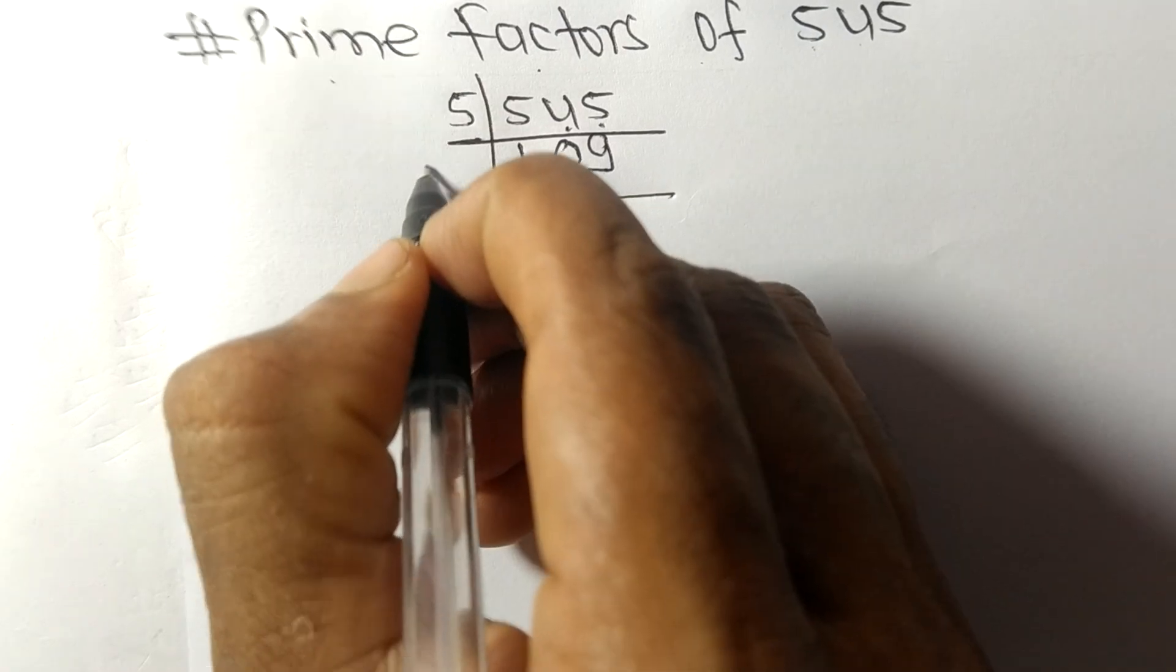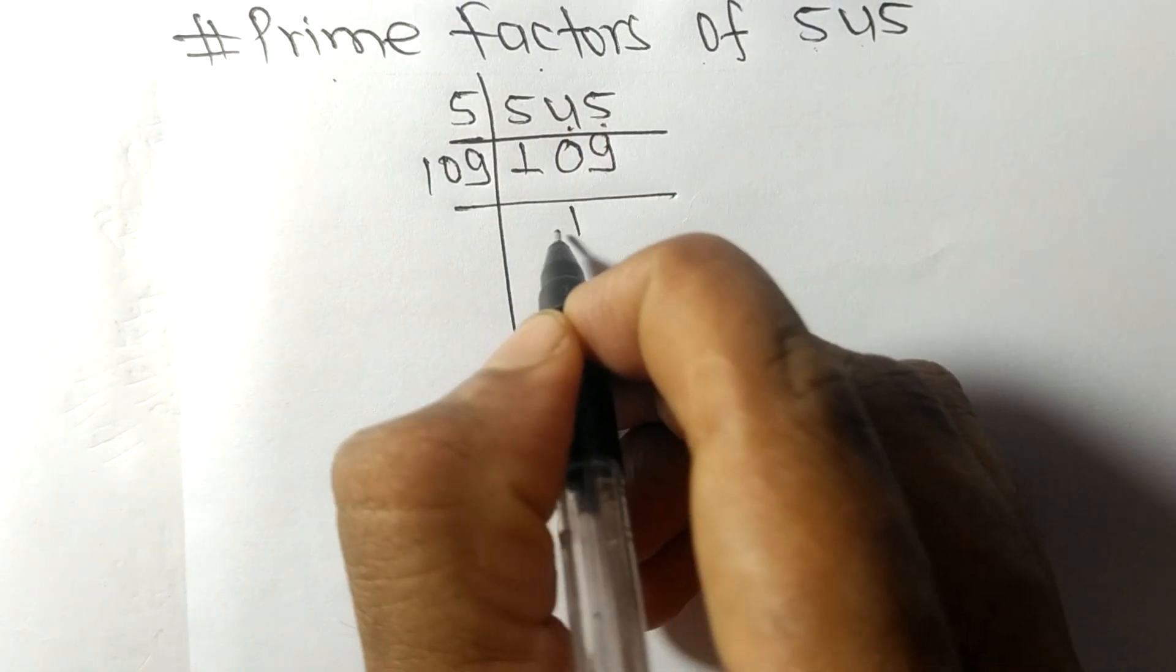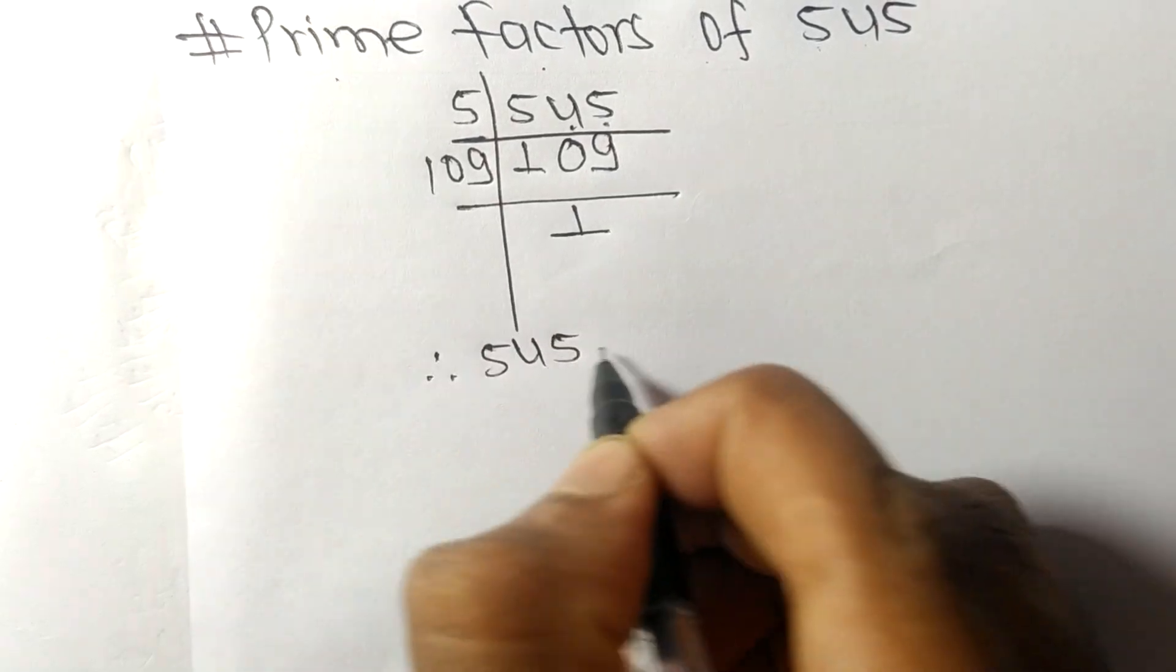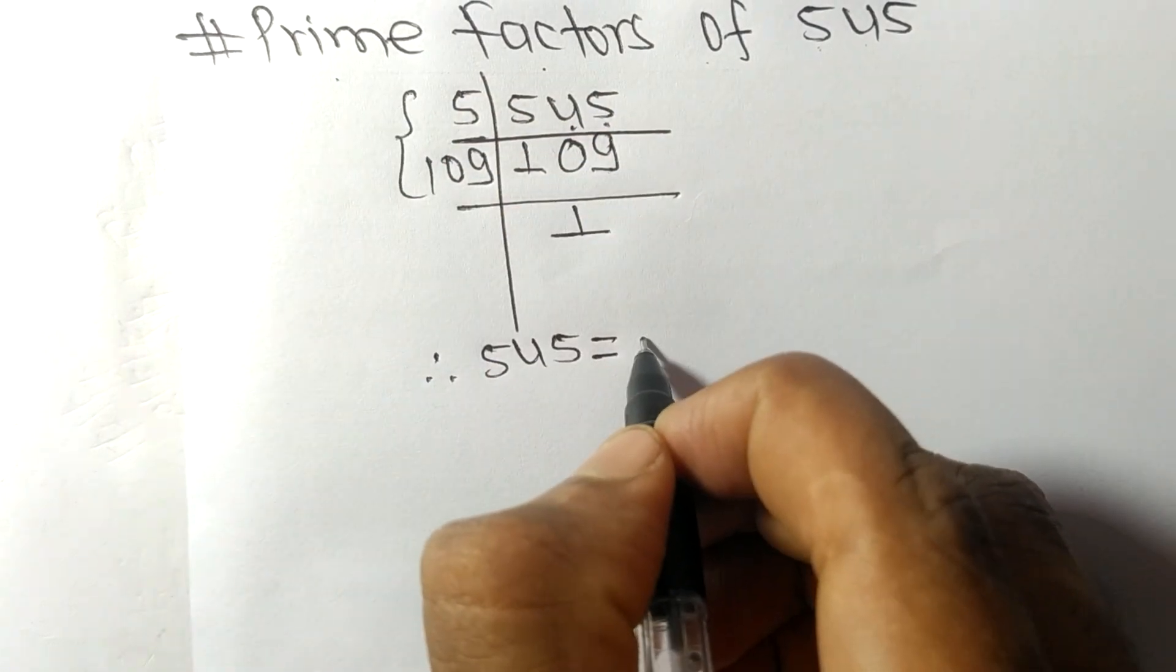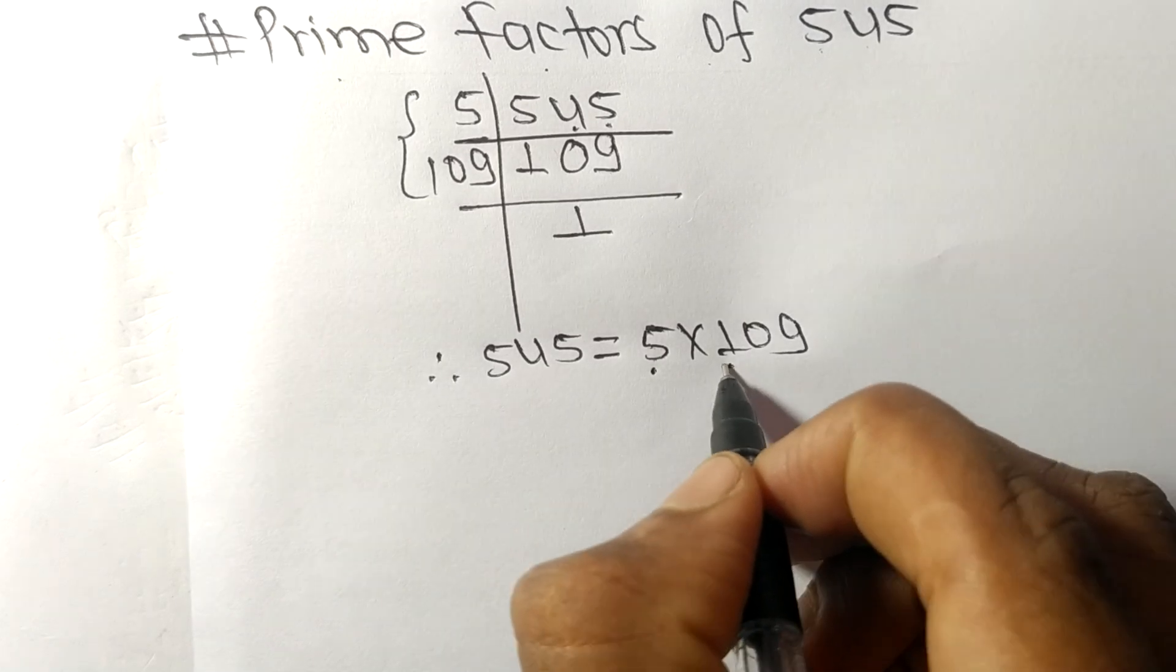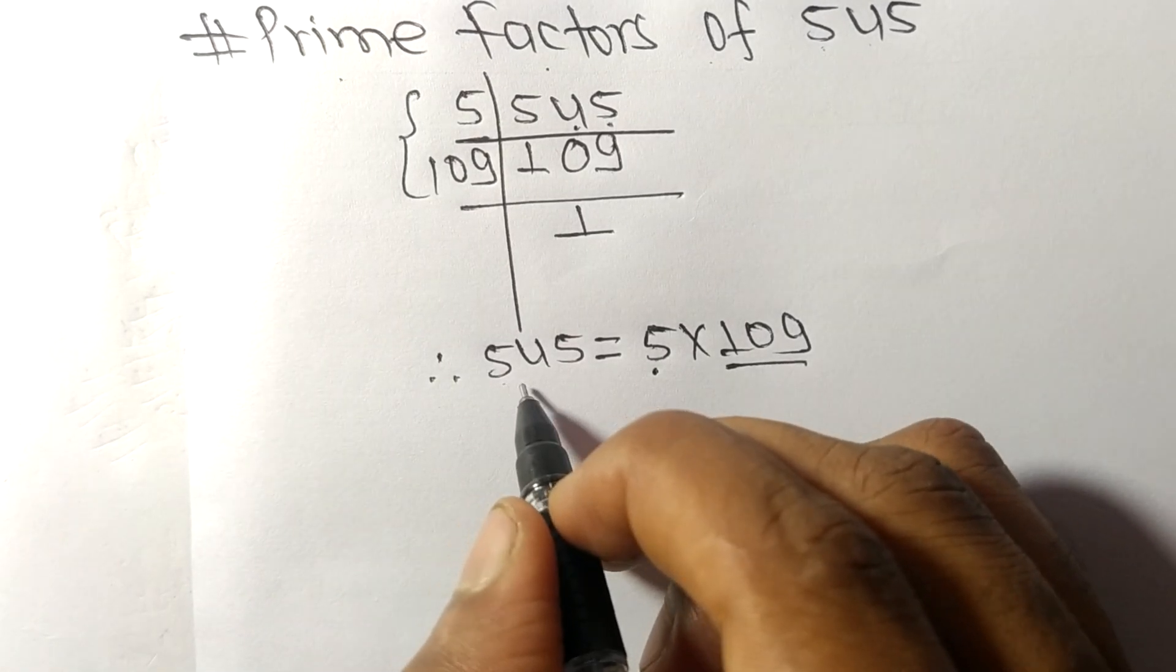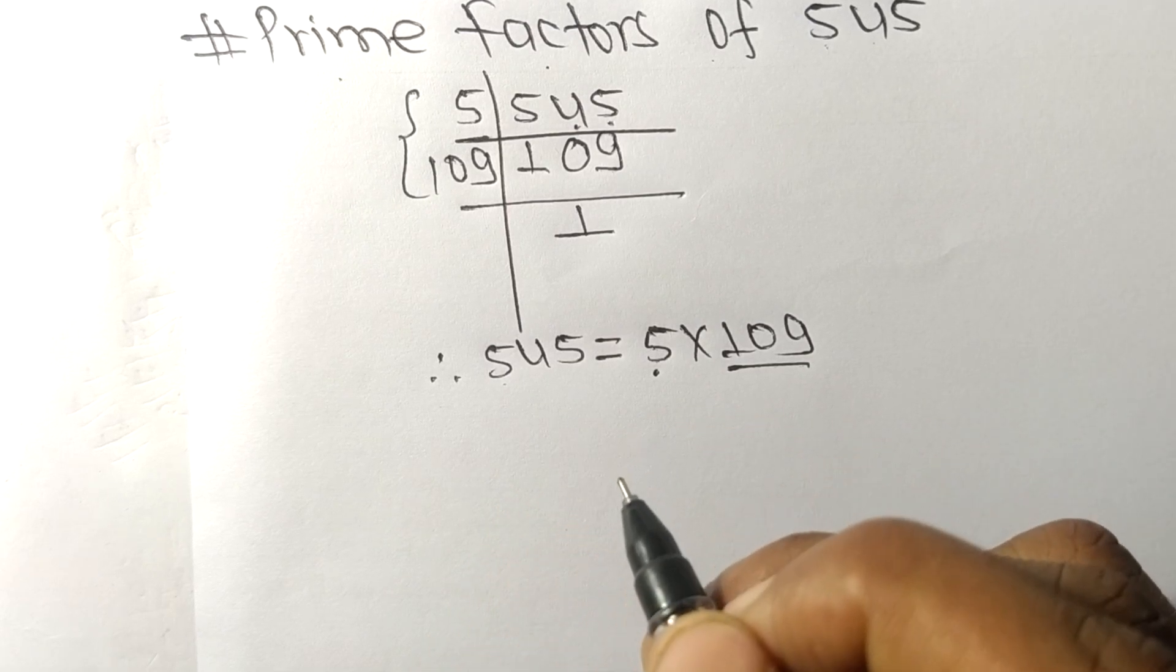So it is divisible by 109 itself and we get here 1. Therefore, 545 is equal to, from this side, it is 5 times 109. So 5 and 109 are the prime factors of 545. So this much for today and thanks for watching.